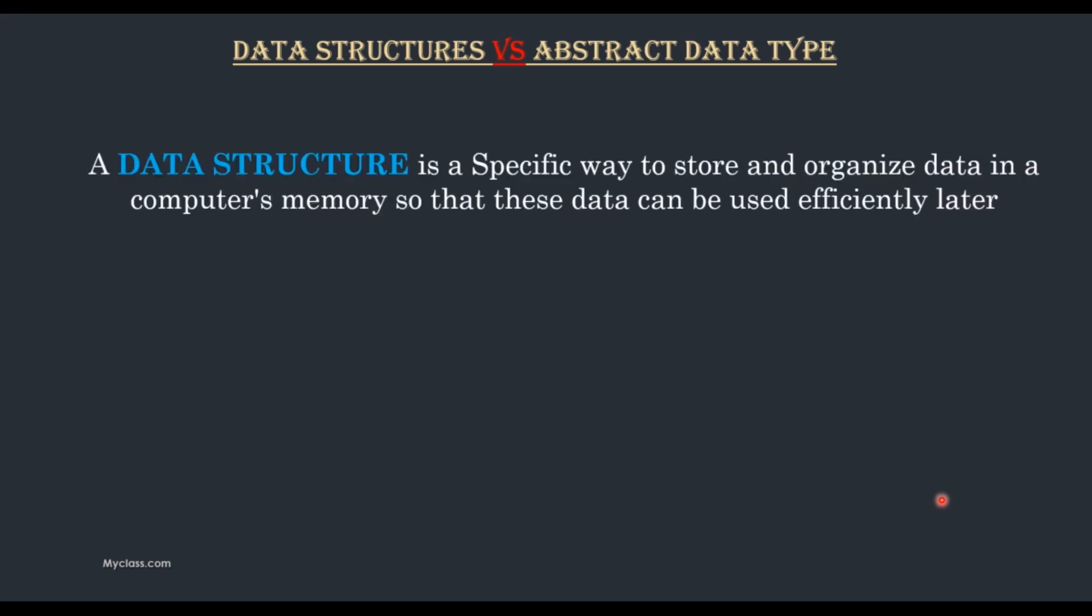A data structure is a specific way to store and organize data in a computer's memory so that this data can be used efficiently later. That means we are storing the data in an organized manner, in a meaningful manner. The only aim is to retrieve the data or process the data efficiently later. That is the concept of data structure.